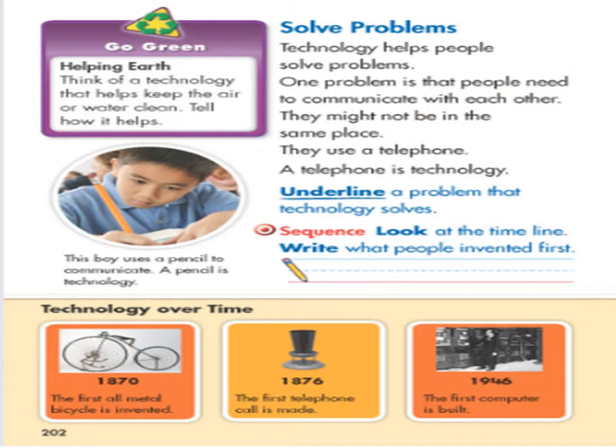Technology helps people solve problems. One problem is that people need to communicate with each other — they might not be in the same place. They use a telephone. A telephone is a technology. Now underline a problem that technology solves: they might not be in the same place and they want to communicate with each other, so they used a phone.